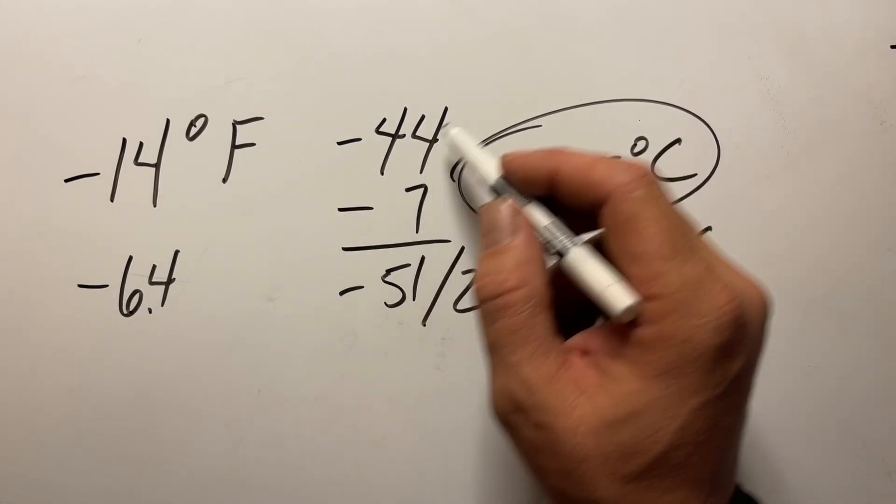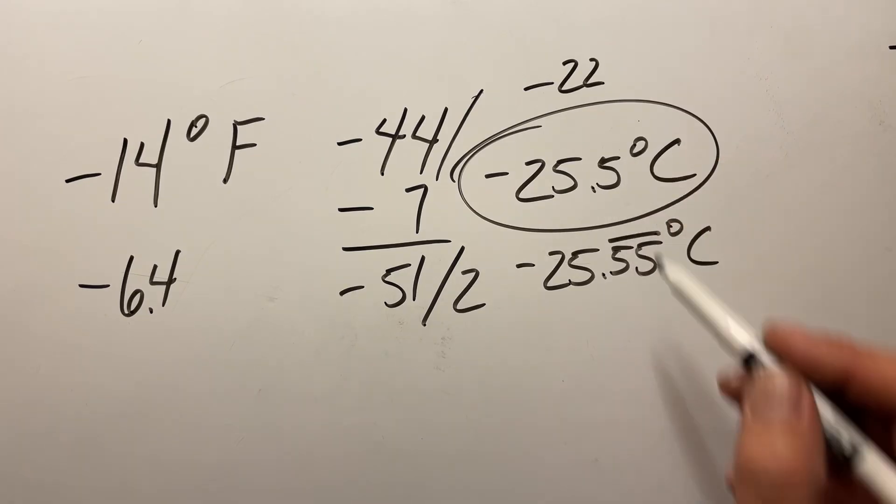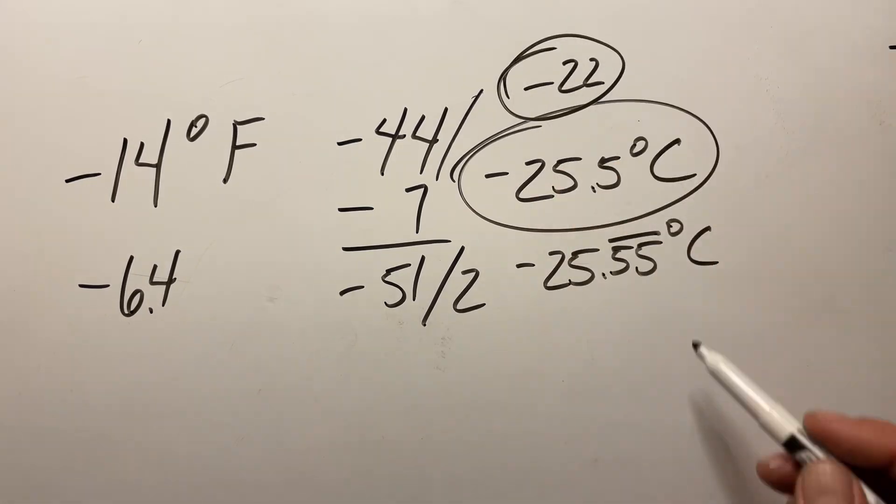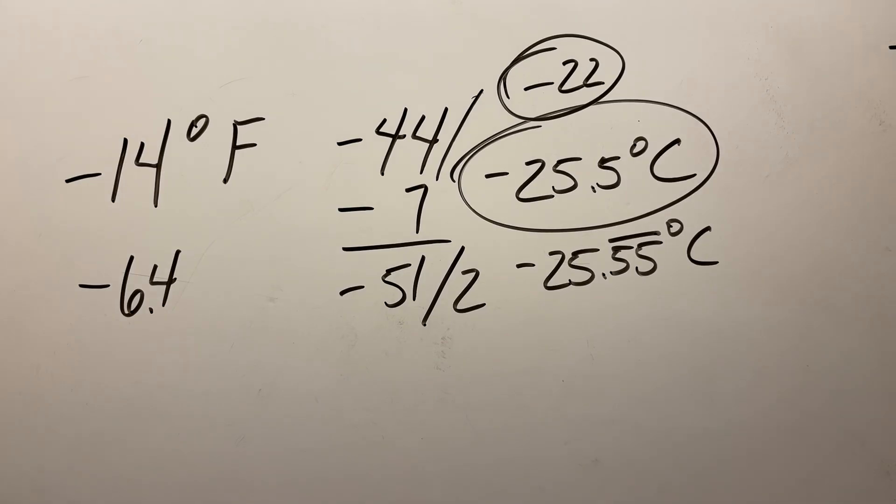Now the true conversion of this is actually negative 25.55 repeating degrees Celsius. So this one stays a lot closer. Now if we just took the negative 44 and we divided that, we would end up with negative 22 in the first shortcut method. And you can see we would already be off about 3.5 degrees, and we're really not that far away from 50.